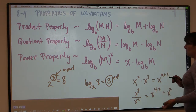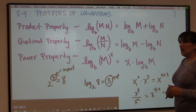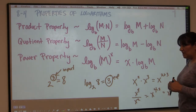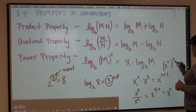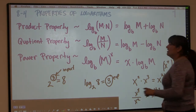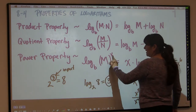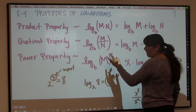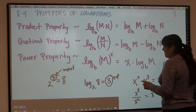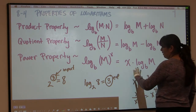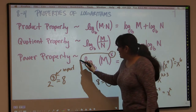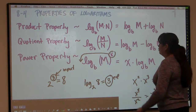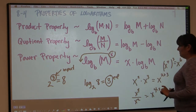When you have a power raised to a power, you multiply the exponents. Something like x squared to the third power becomes x to the sixth. So this is an exponent being raised to a power, and you multiply them. You can see that in the power property, the x goes in front and you multiply — it becomes x times log base b of m.